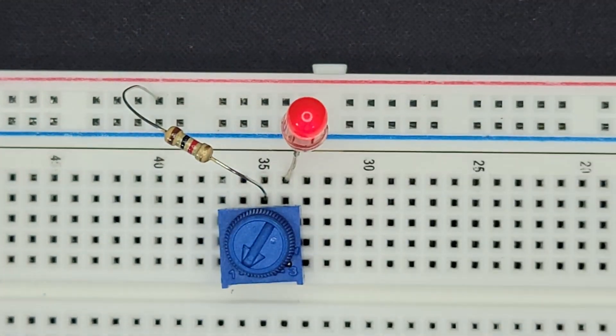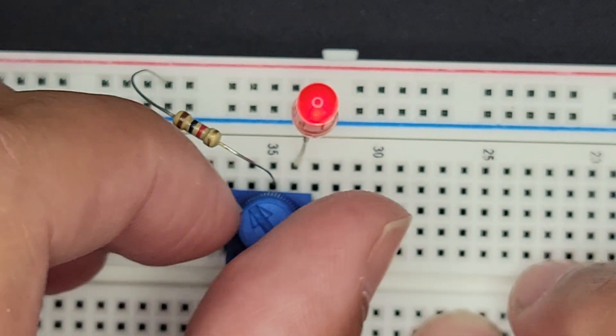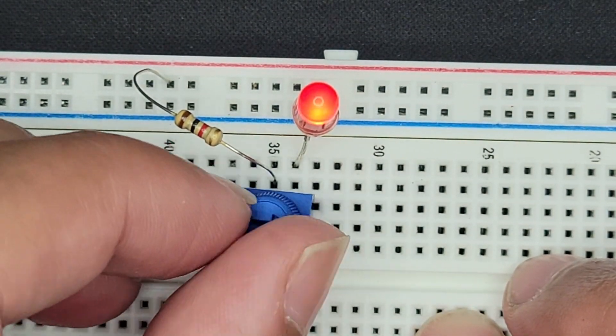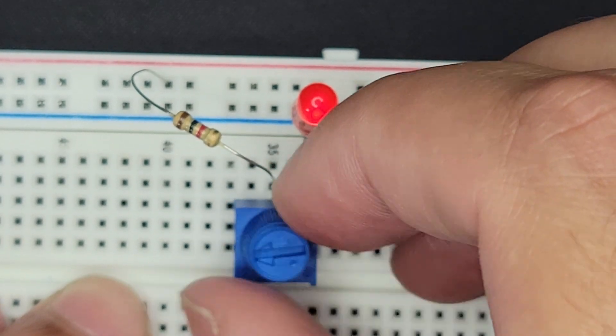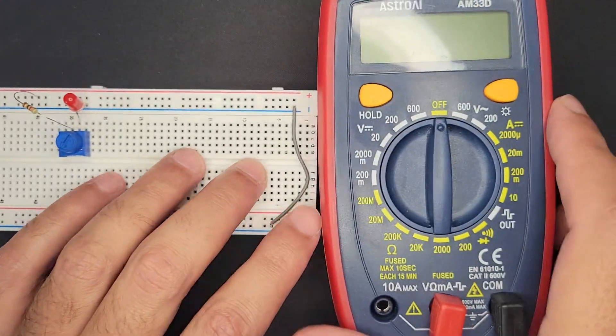That was kind of accidental. So in this case, we have power going into the center pin. Now we can see that the LED gets brighter as I turn it up. I'm going to put it back to how we had it before. I'm going to try and measure the resistance to get a visual representation.